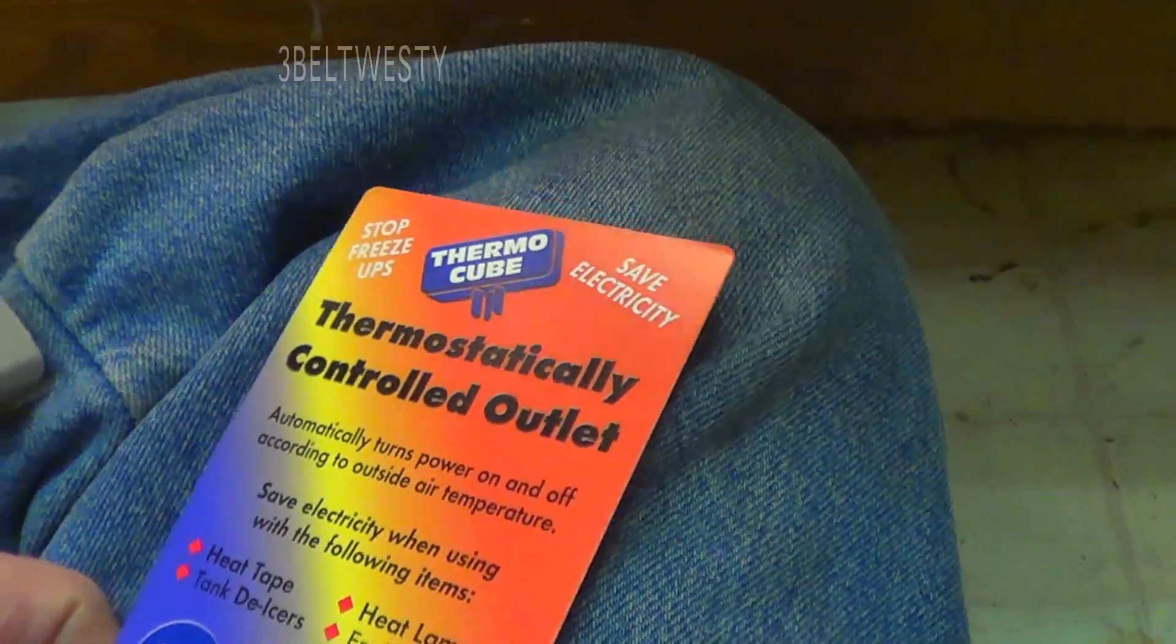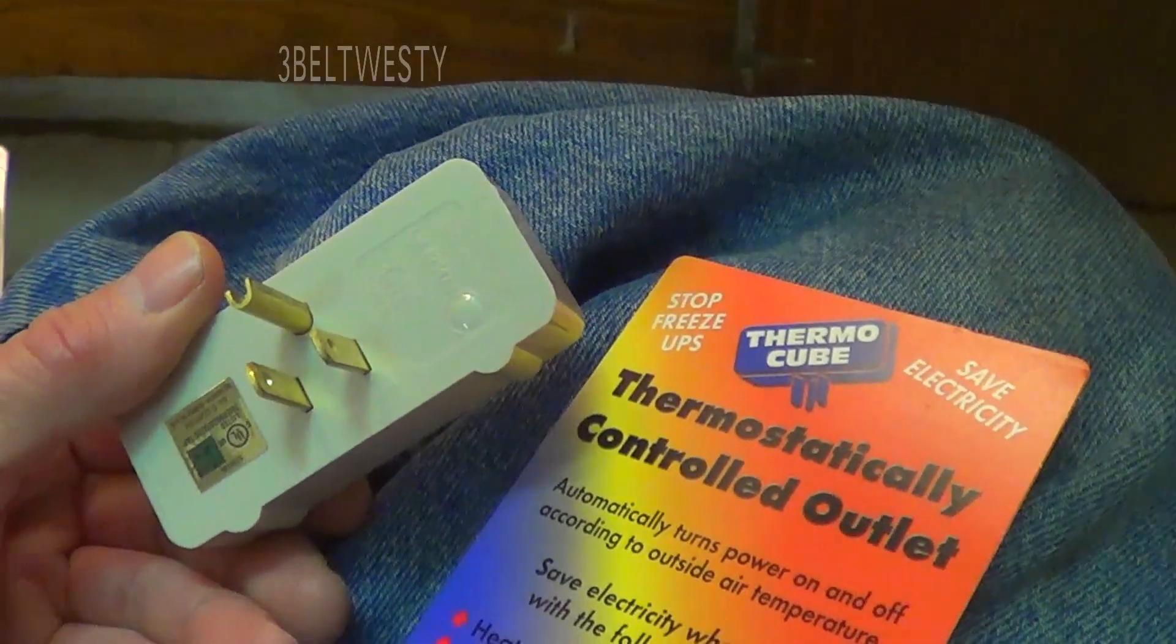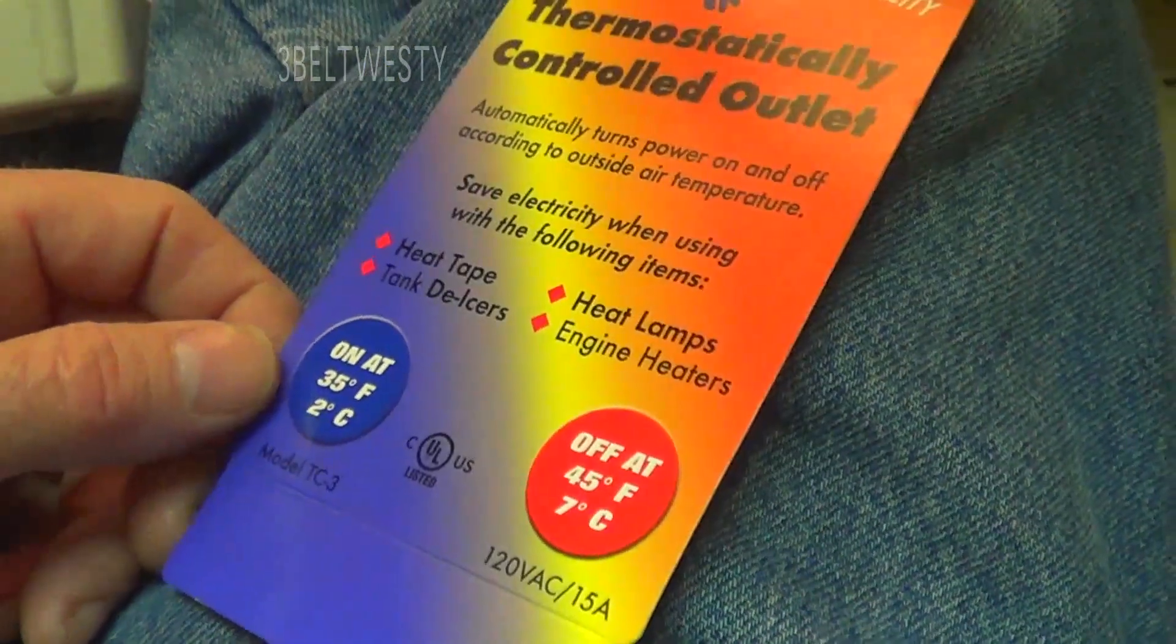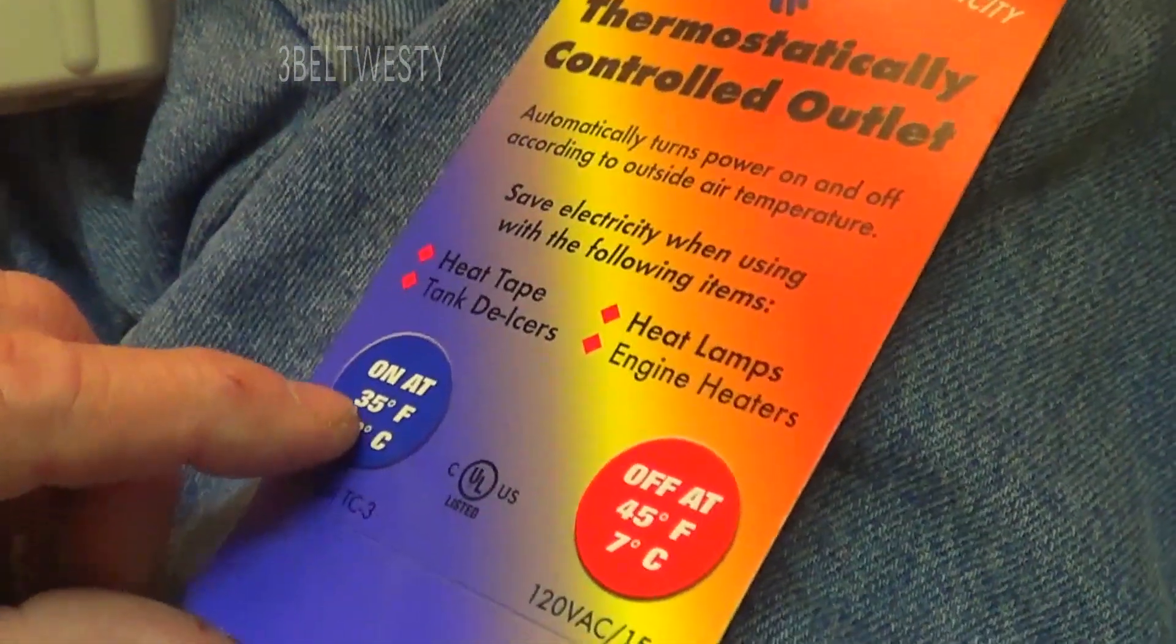So what we've got is a cool gizmo called a thermostatically controlled outlet, and this simply plugs in an outlet. It has two plugs and it turns on and off up to 15 amps. I'm only going to use this for a little bit less than an amp because it's a 100-watt bulb.